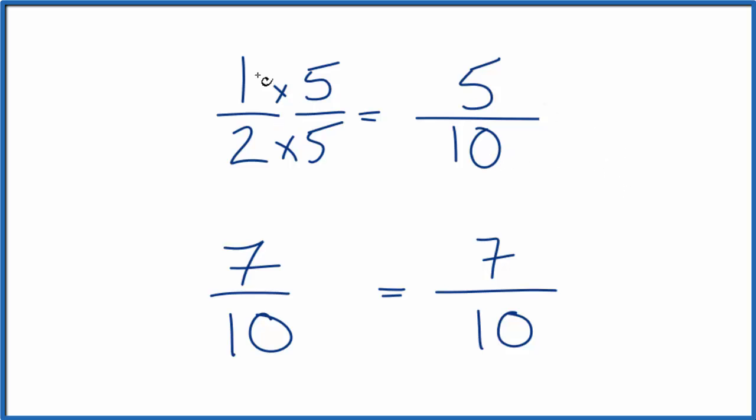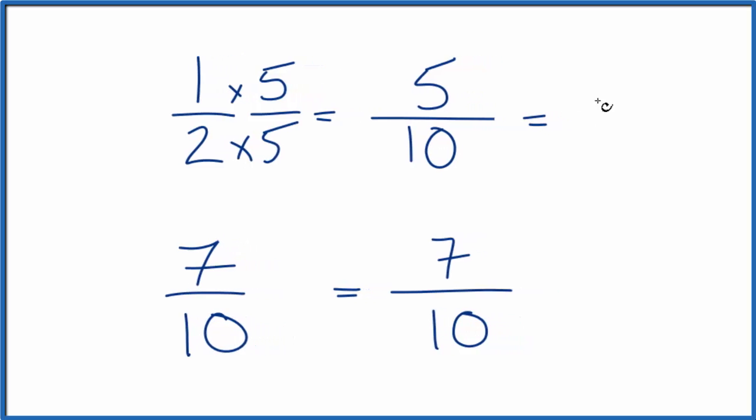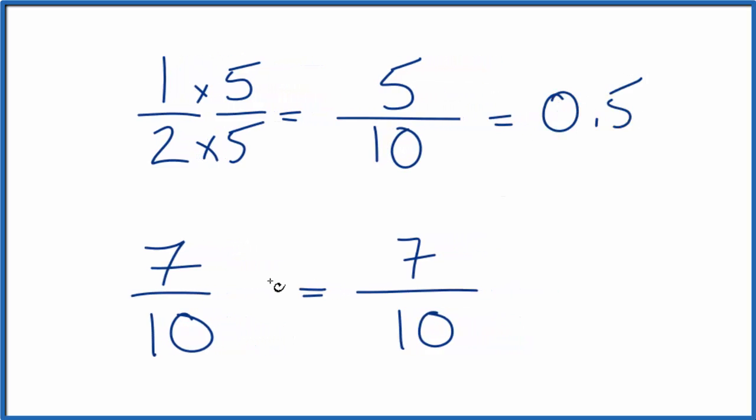So we could also compare 1 half and 7 tenths by getting this to be a decimal. 5 divided by 10, or 1 divided by 2, they both equal 0.5. 7 divided by 10, that equals 0.7. So you can see 0.7 is larger than 0.5.